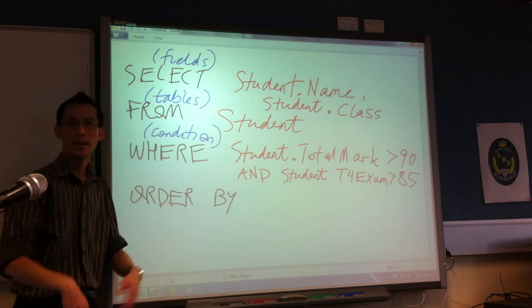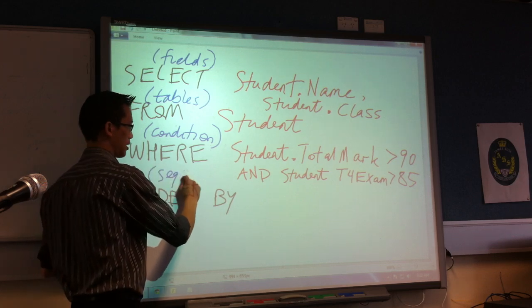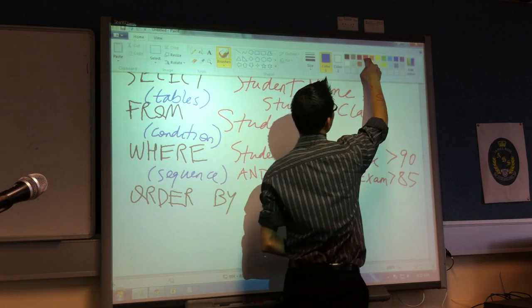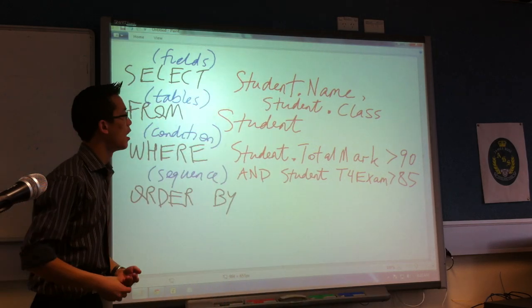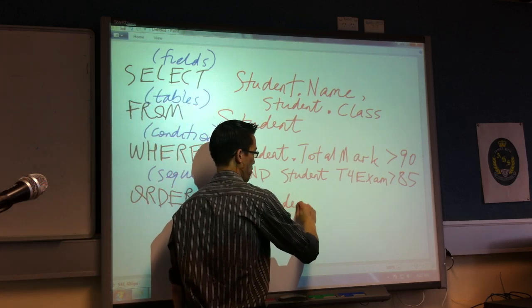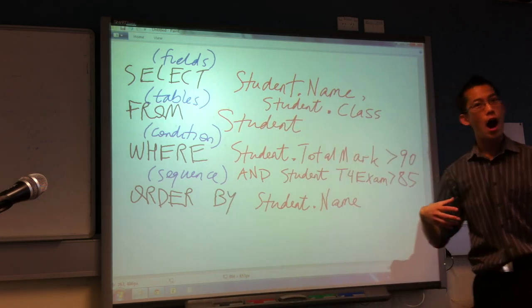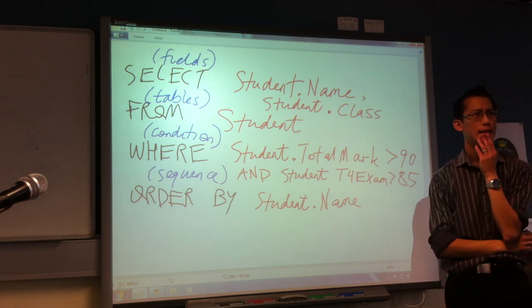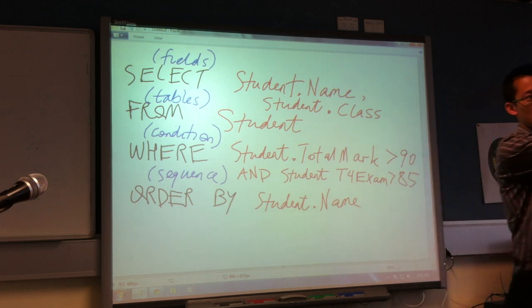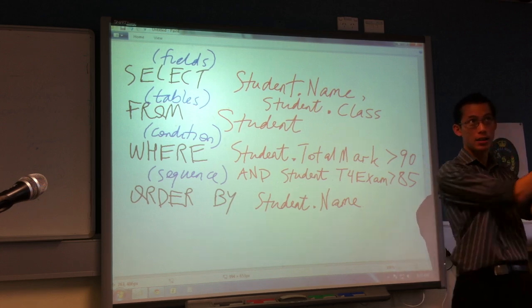I could go student total mark OR student term 4 exam. So these are different logical operators. We'll look at those in a second. Okay, lastly, I've looked at which fields, I've looked at the tables, I've applied a condition. And lastly I want some kind of order. I don't want them placed out randomly. Databases are really good at ordering things. So order, what kind of sequence am I going to put these in? Again I'll pick a field. Perhaps the results I want, I can put them in order of name. I might say by student name.